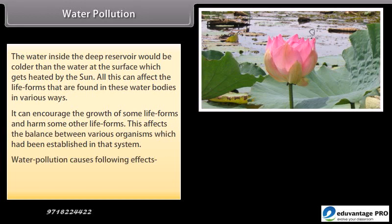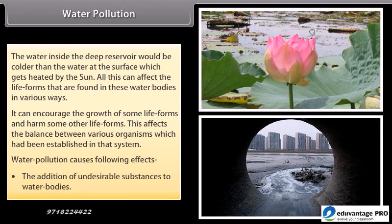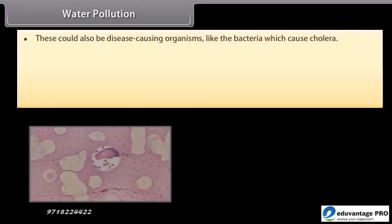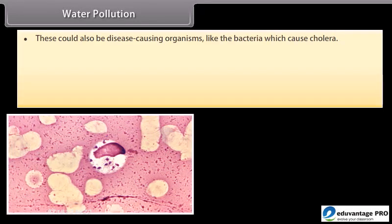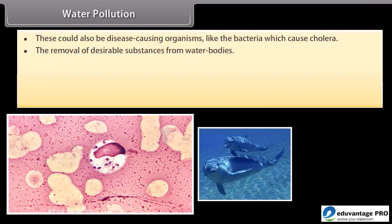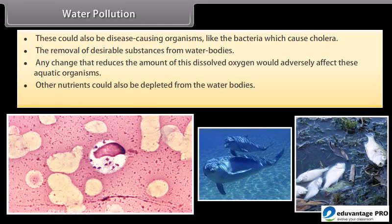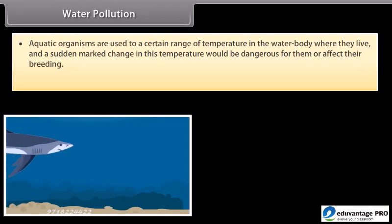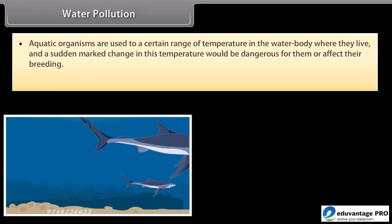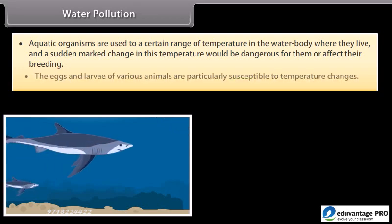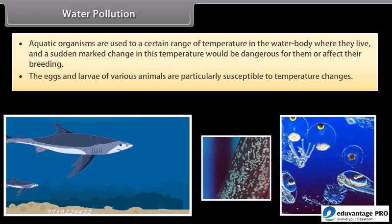Water pollution causes several effects. The addition of undesirable substances to water bodies can include disease-causing organisms like the bacteria which causes cholera. The removal of desirable substances, such as dissolved oxygen, would adversely affect aquatic organisms. Other nutrients could also be depleted from water bodies. A change in temperature is also harmful — aquatic organisms are used to a certain range of temperature, and a sudden marked change would be dangerous or affect their breeding. The eggs and larvae of various animals are particularly susceptible to temperature changes.